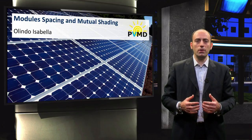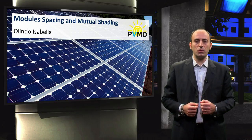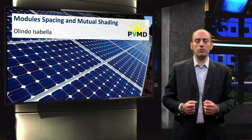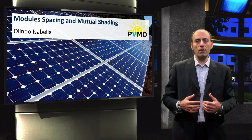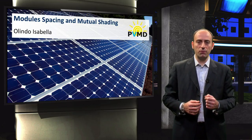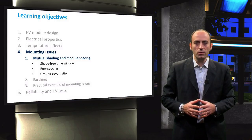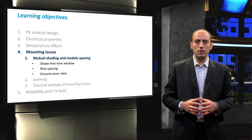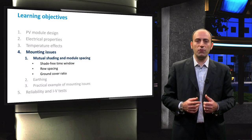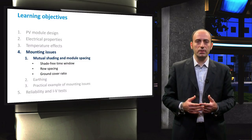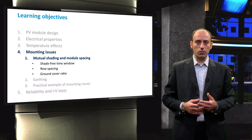In this video, we are going to learn how to calculate the inter-row spacing for tilted or ground-mounted PV systems in order to avoid potential self-shading issues. The main topics that will be discussed are the calculation of the shade-free time window, the row spacing, and the ground cover ratio.